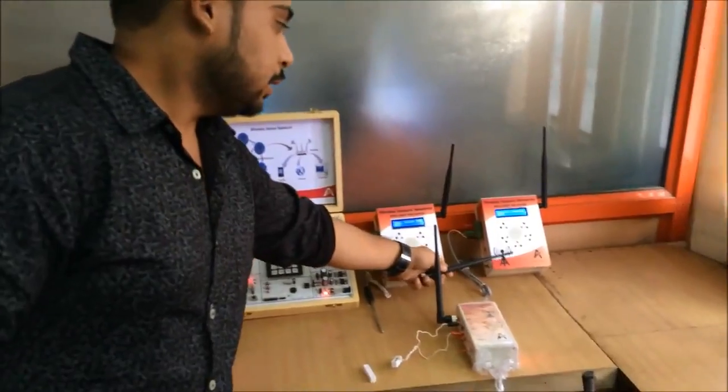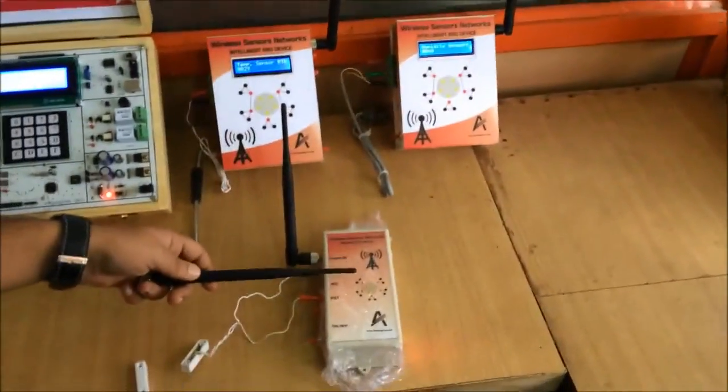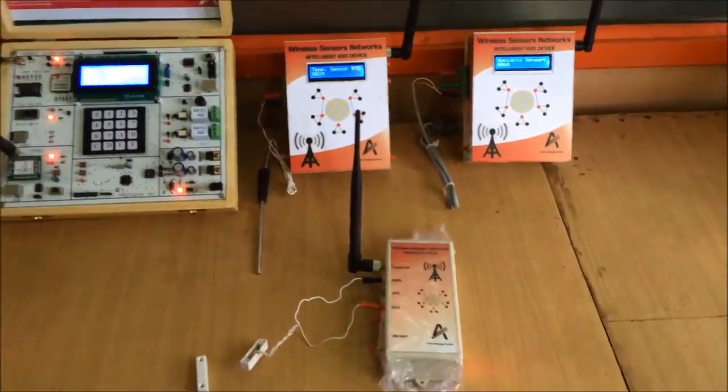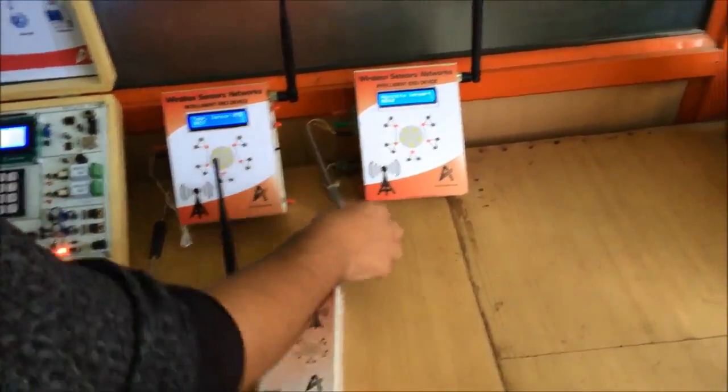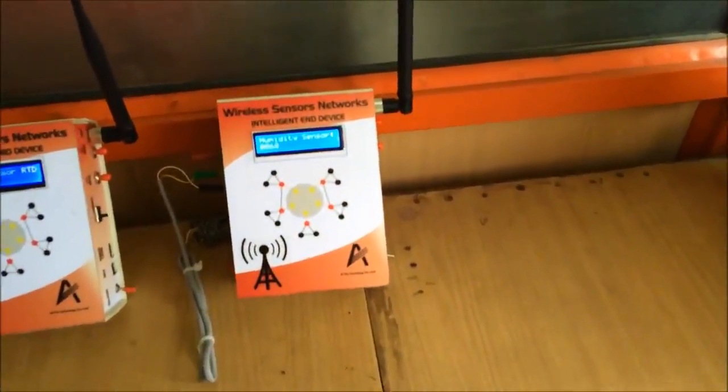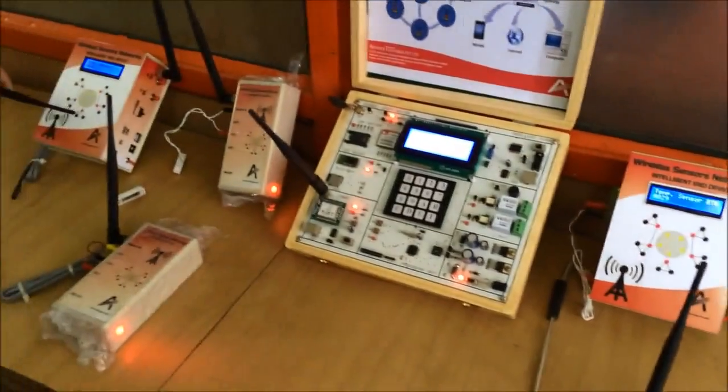You can see here, this is the intelligent end node and this is your non-intelligent end node. In this intelligent end node, you can clearly see it is having a sensor like humidity sensor. One here is the RTD sensor and one is the temperature sensor here.